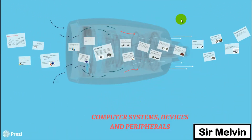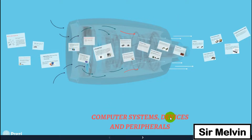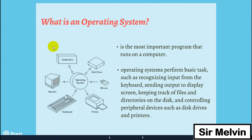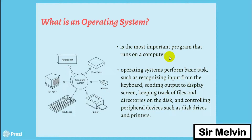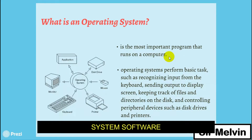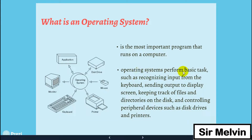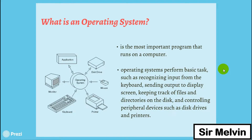Good day to each and everyone. Our discussion for today is all about computer systems, devices, and peripherals. Let us start with: what is an operating system? The operating system is the most important program that runs on computers. The OS is part of a category of software, specifically system software, compared to computer hardware.